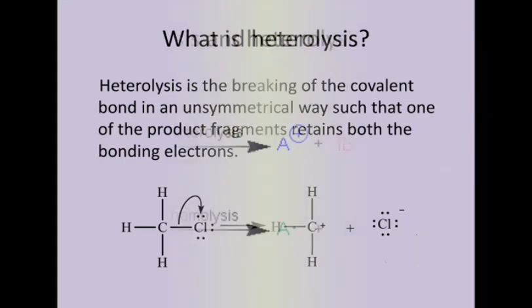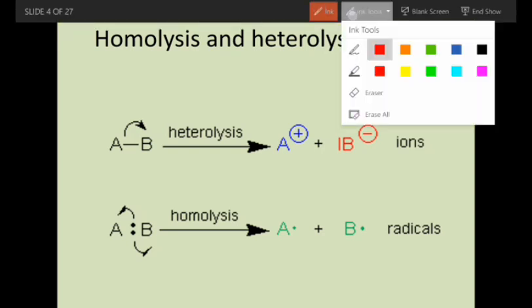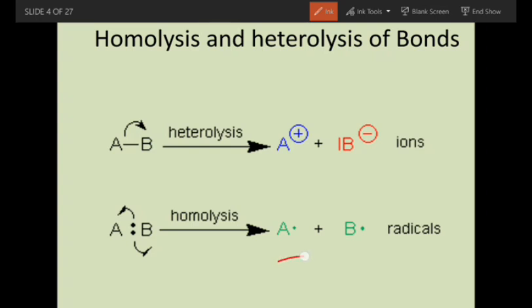Now, we can see the differences between homolysis and heterolysis of bonds — a pictorial representation. In homolysis, A and B atoms are bonded by two electrons. When bond fission takes place, one electron goes with the A atom and the other electron goes with the B atom, giving two radicals. The one-electron flow is represented by a single-headed arrow, also called a fish hook arrow. This is the direction of movement, represented by a fish hook arrow.